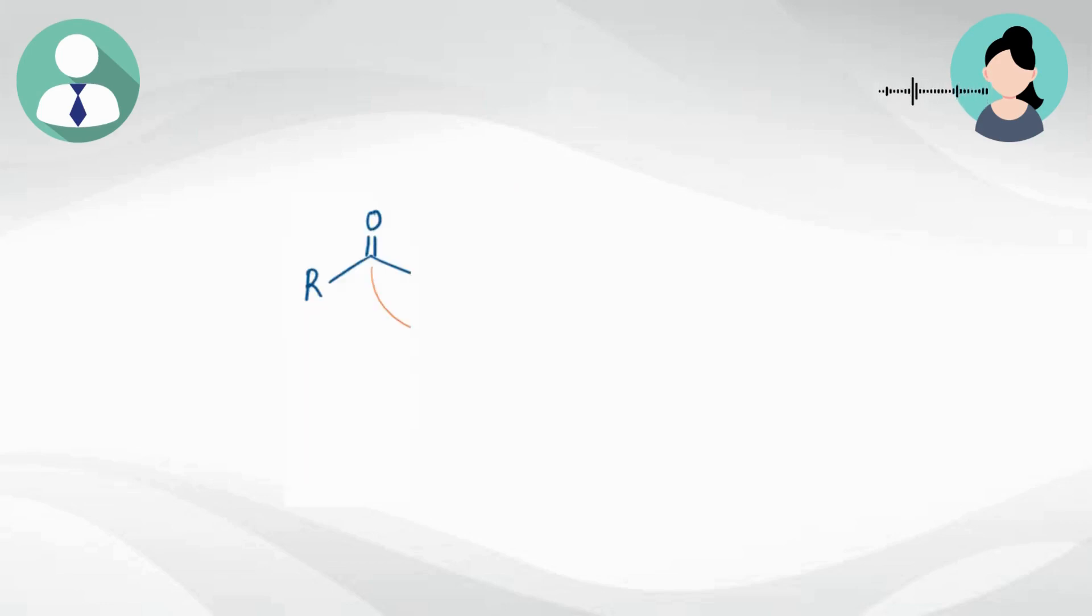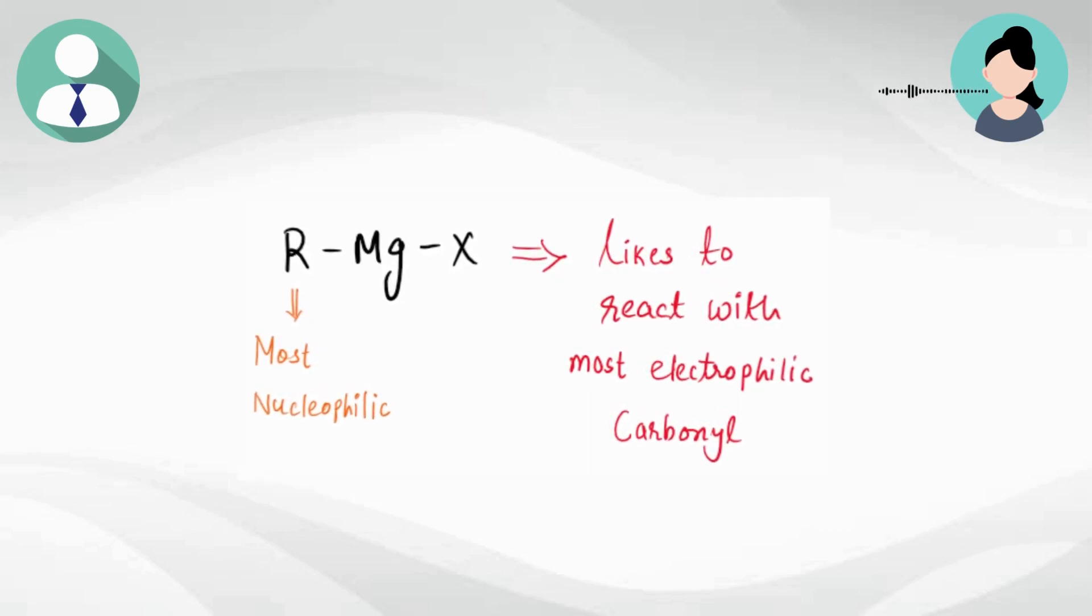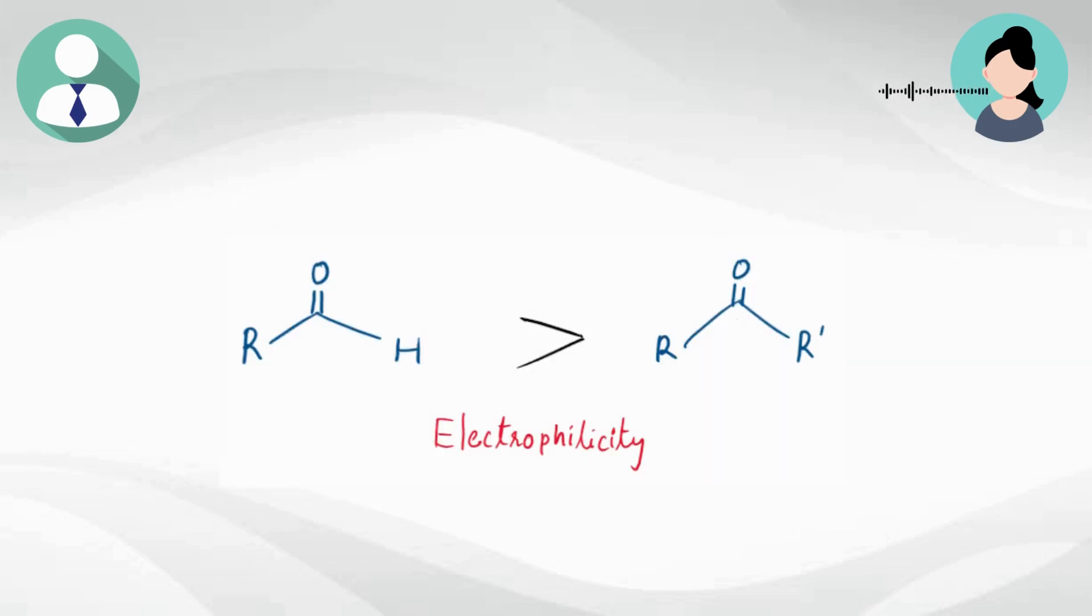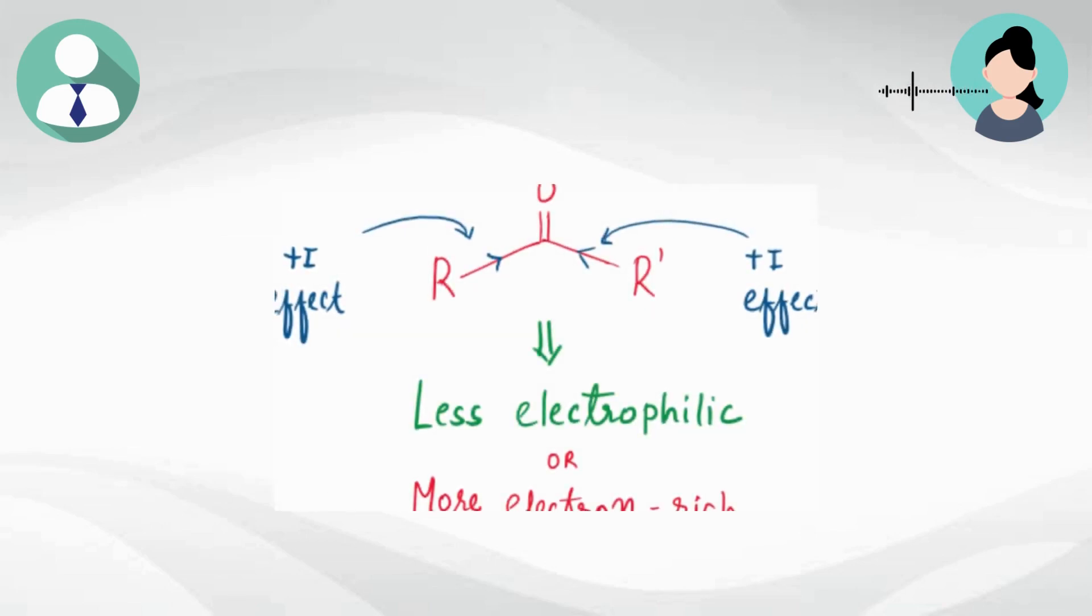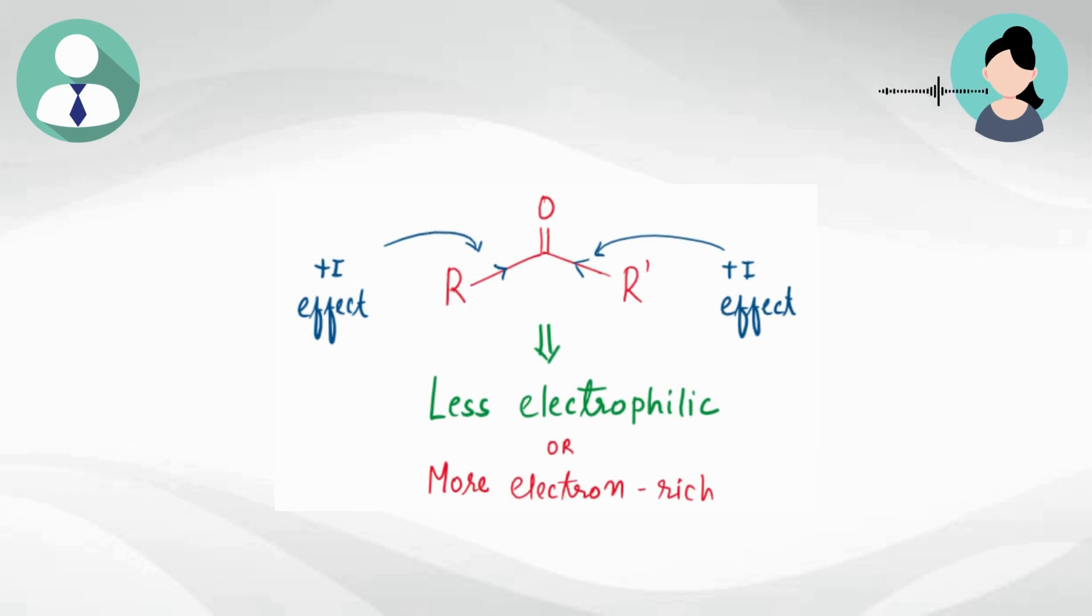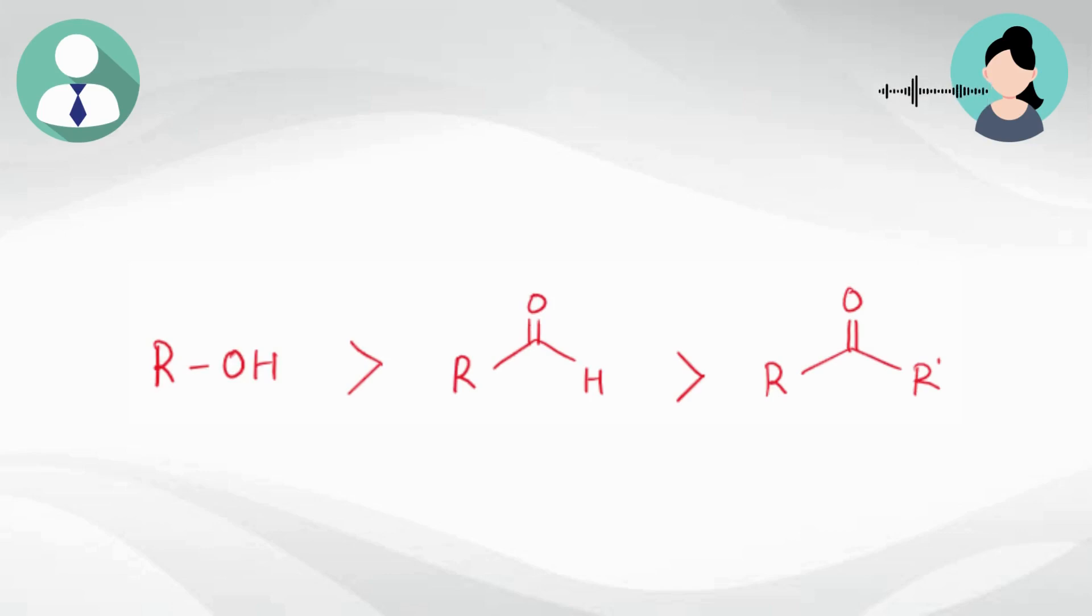And in case of aldehyde and ketone, we can decide their reactivity on the basis of their electrophilicity. Grignard reagent is highly nucleophilic in nature, so it will react faster with more electrophilic or electron-deficient carbonyl. Now, generally carbonyl of aldehyde is more electrophilic than the ketone because carbonyl of ketone is attached to two alkyl groups, which makes ketone less electrophilic by showing plus I effect. And that's why aldehyde reacts faster with Grignard reagent than the ketone. And therefore, reactivity order of these given compounds is something like this.